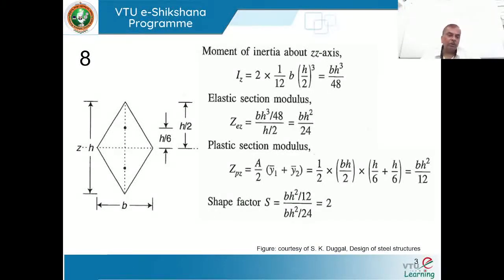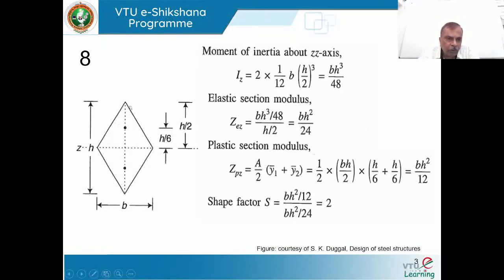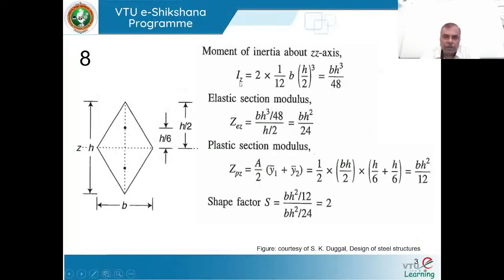The moment of inertia of the top triangle about its base is BD³/12, where D = H/2. So the moment of inertia about the Z-axis for the top triangle is B(H/2)³/12. Similarly for the bottom triangle. Therefore, the total moment of inertia I_Z for the entire rhombus section is BH³/48.